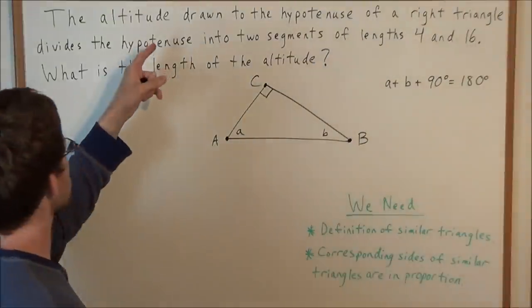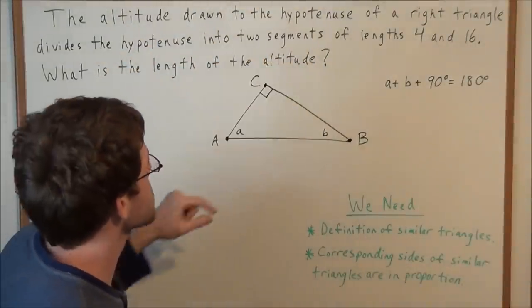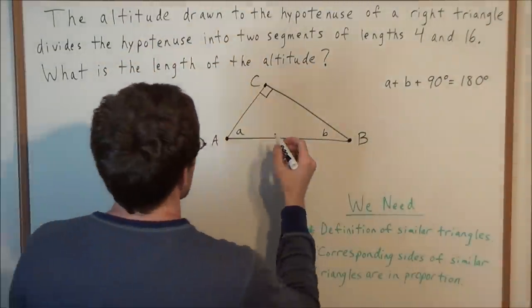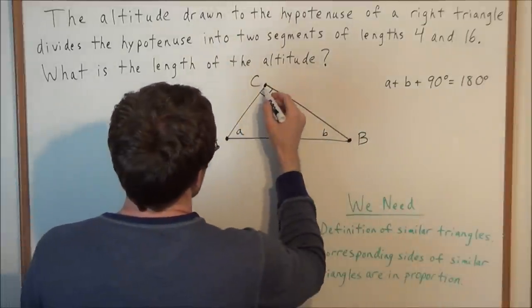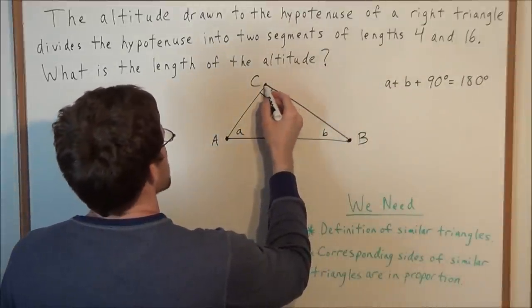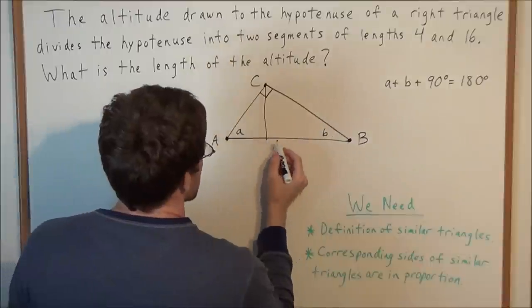So now we can move forward in the problem. The altitude drawn to the hypotenuse of a right triangle, so we're going to draw an altitude to the hypotenuse which is opposite the right angle. So we're going to draw the altitude from vertex C to side AB.